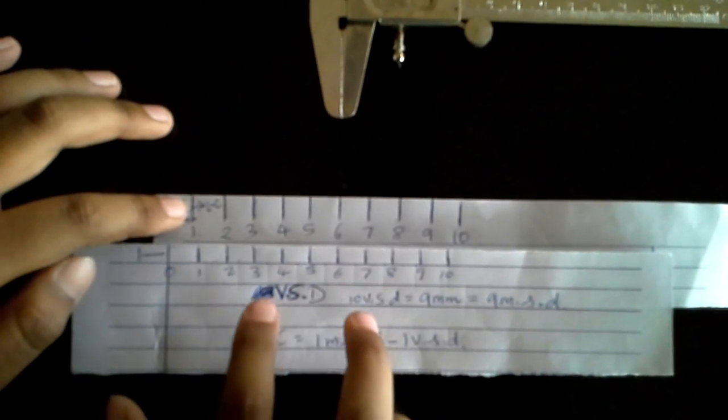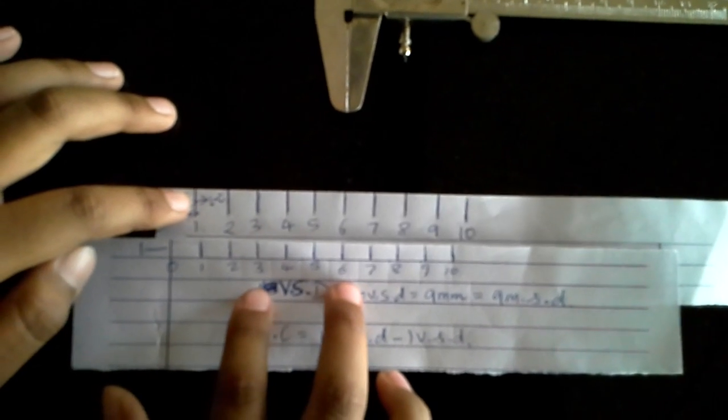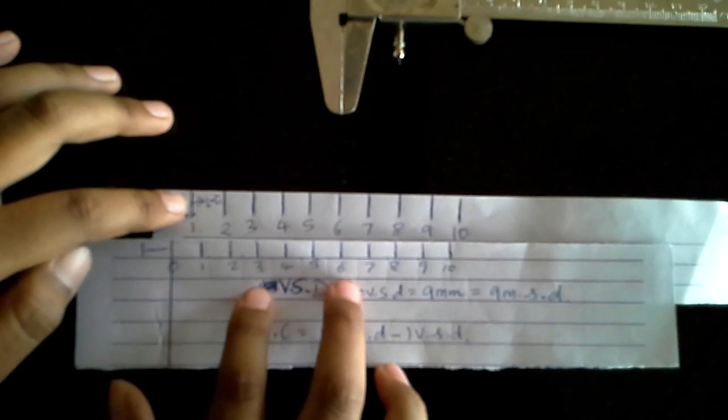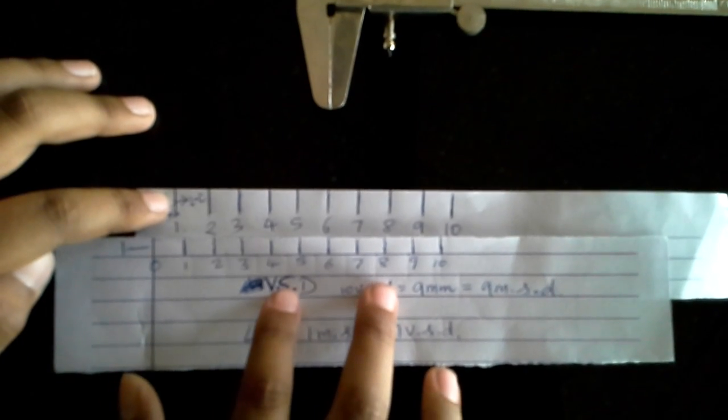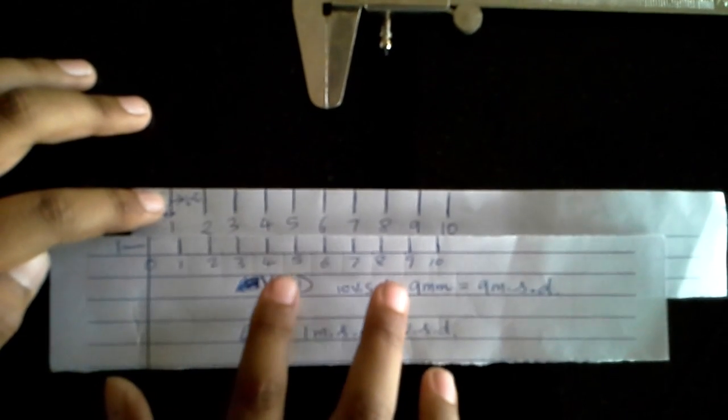Now three and three are coinciding. So I'm going to move it a little more. So now four and four are coinciding. Move it a little more. Five and five are coinciding. Move it a little more. Six. Our thing is not that accurate. Seven and seven. Eight and eight. Nine and nine.